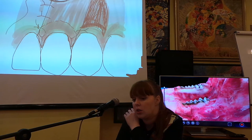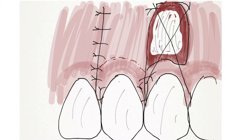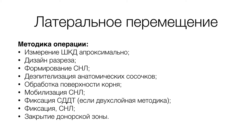Донорская зона заживает вторичным натяжением, или её можно закрыть коллагеновой гемостатической губкой — уложить туда коллагеновый материал и прижать костнообразным отрасным швом. При латеральном перемещении мы сначала измеряем ширину кератинизированной десны аппроксимально, моделируем дизайн разреза, выполняем разрез, формируем слизисто-надкостничный лоскут, депетализируем анатомические сосочки, обрабатываем поверхность корня, мобилизируем лоскут. Если используется двухслойная методика, фиксируем аутотрансплантат, сверху фиксируем слизисто-надкостничный лоскут и закрываем донорскую зону.